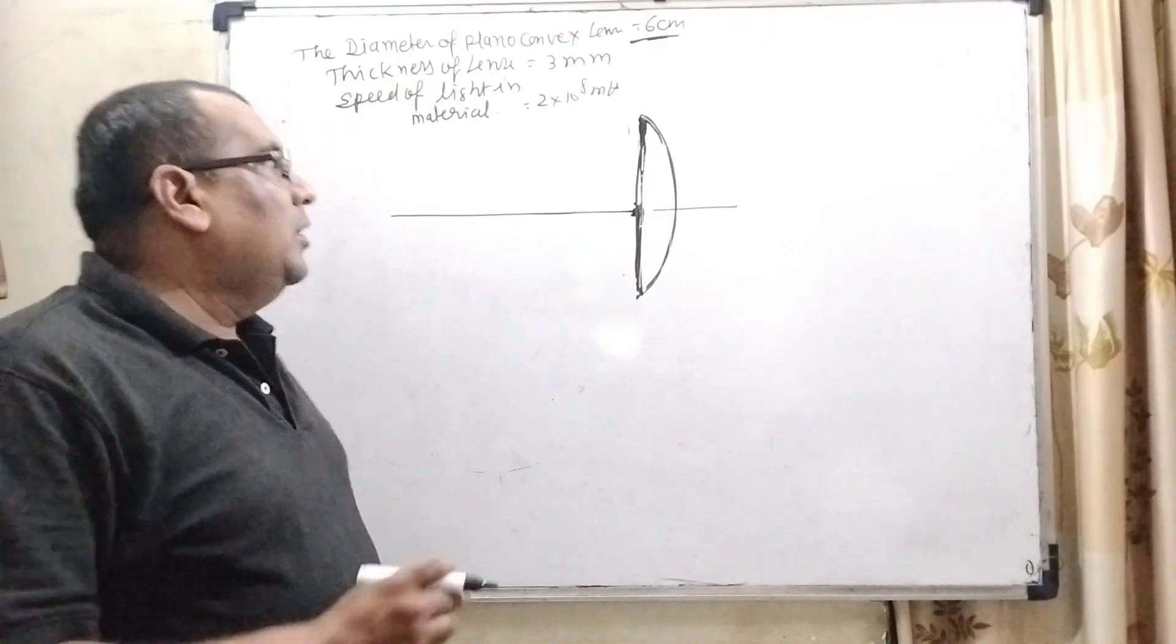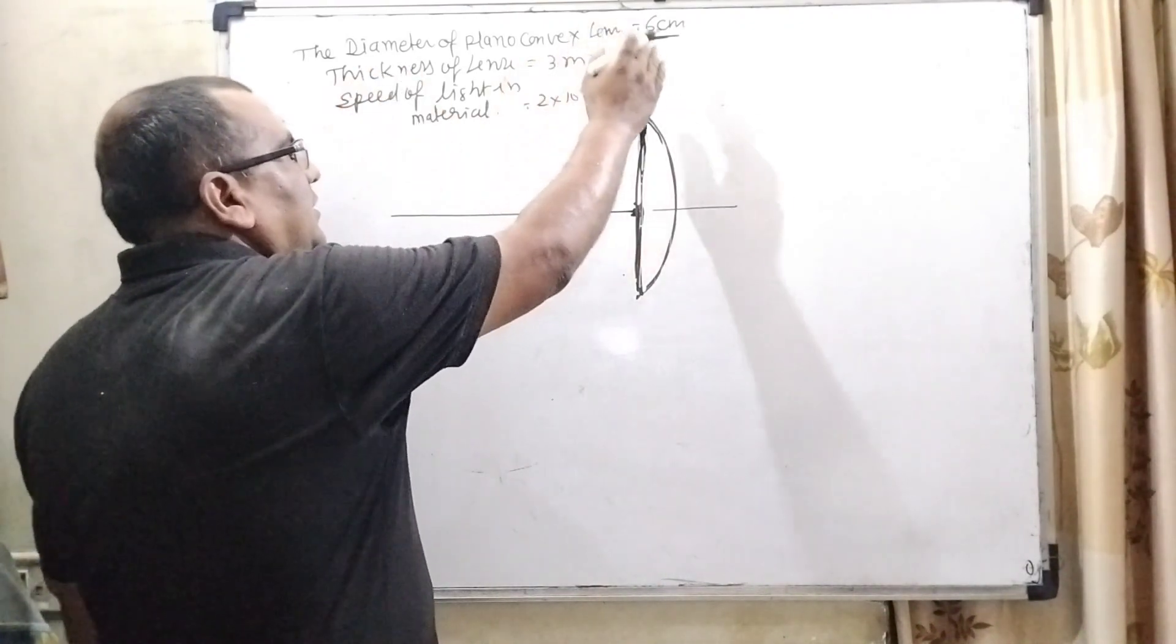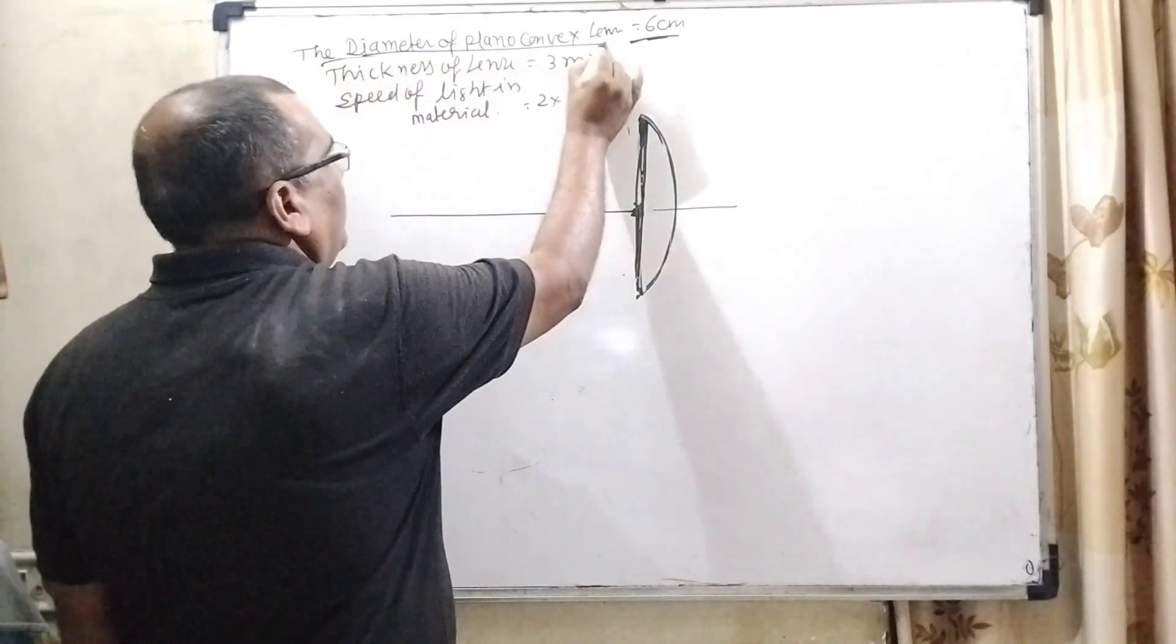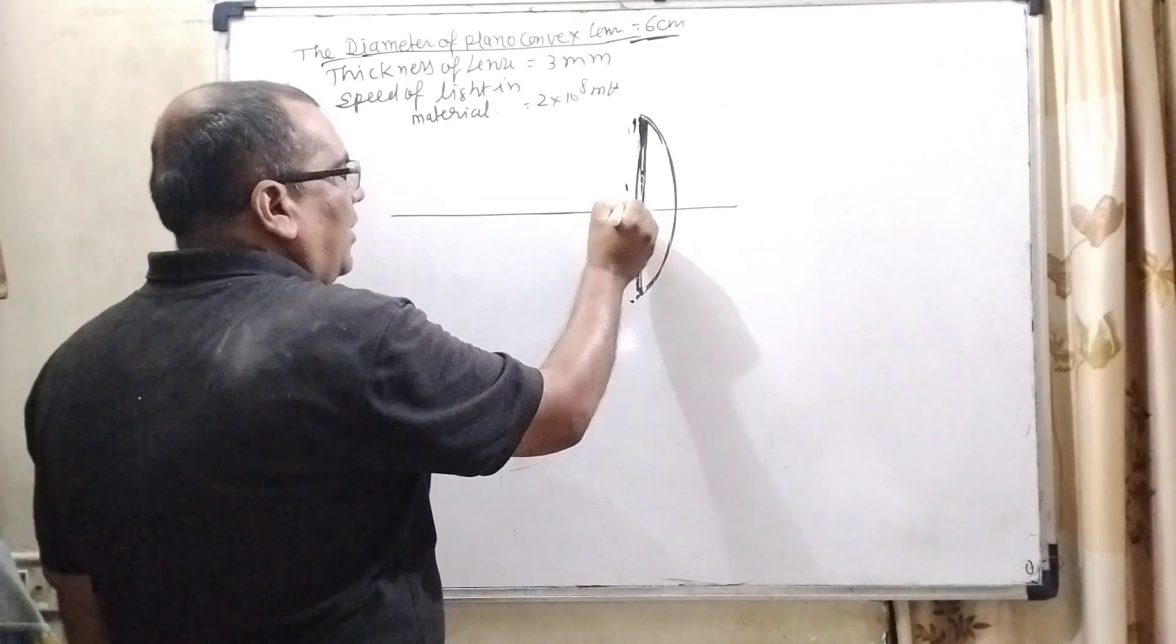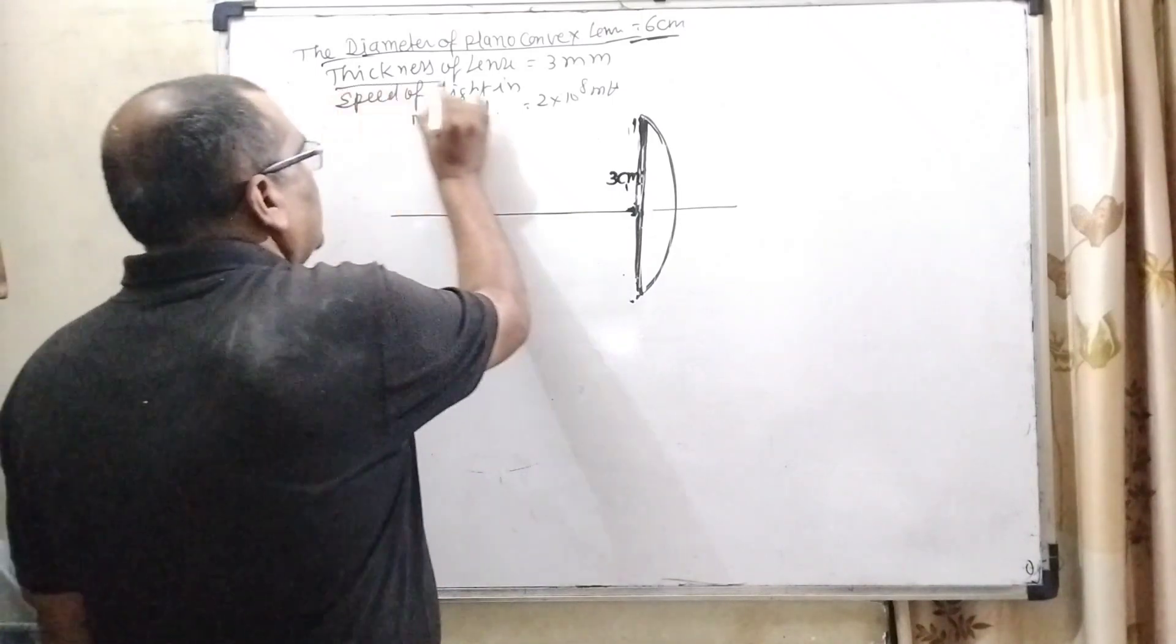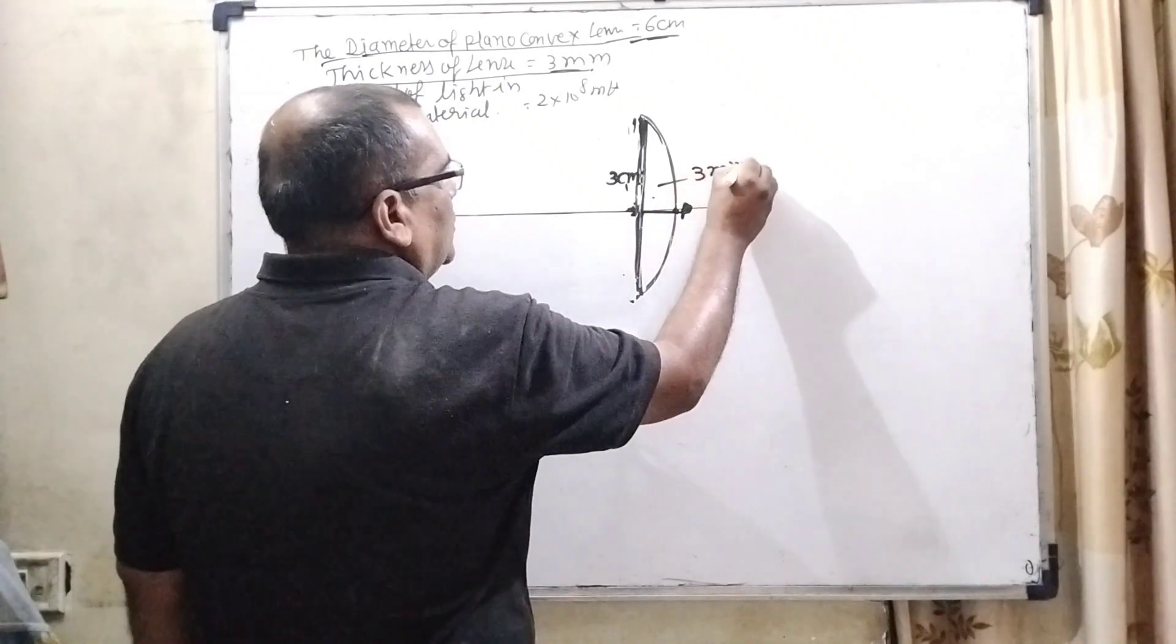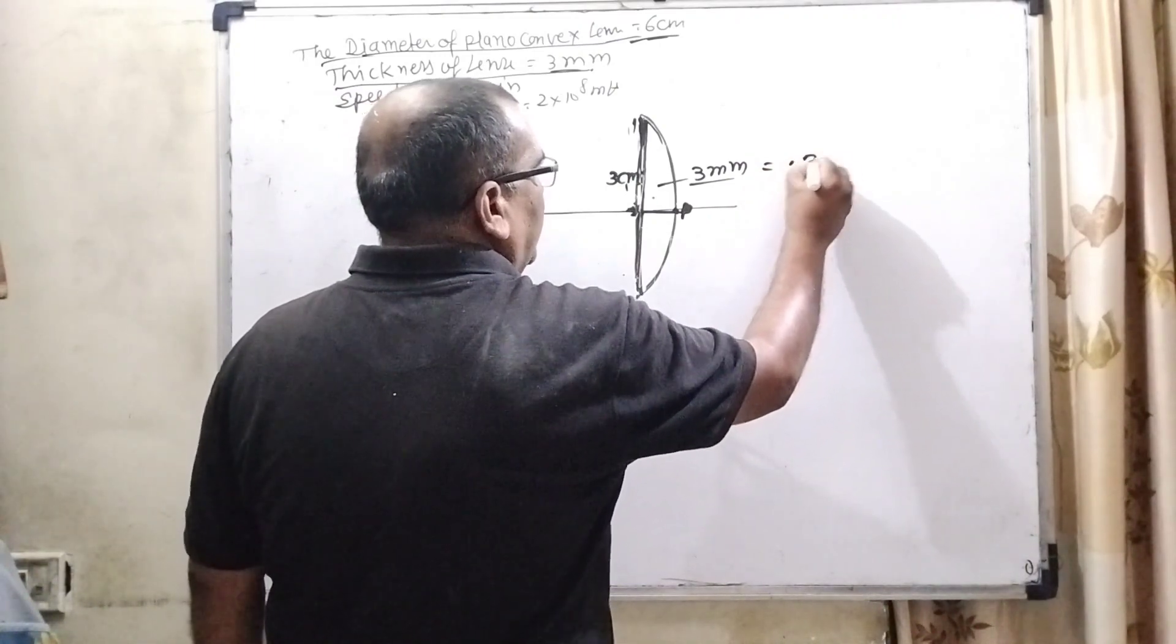Now here, all the information of the question is given. The diameter of the plano-convex lens is 6 cm, it means its aperture. The total length is 6 cm, it means half from the principal axis is 3 cm. And thickness of the lens means this distance, given as 3 mm. Convert into centimeter divided by 10, then we get 0.3 cm.